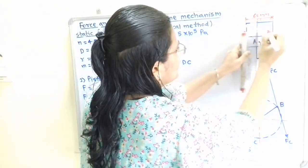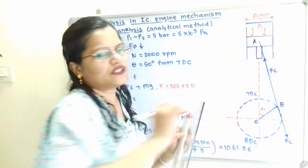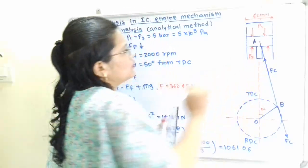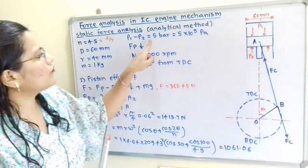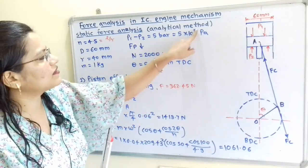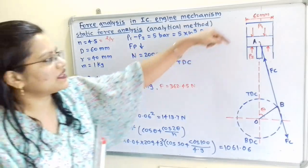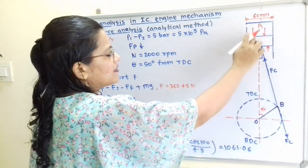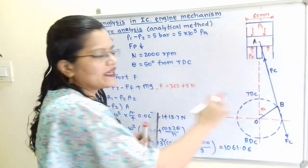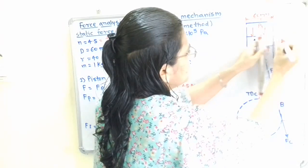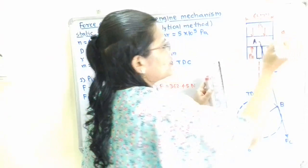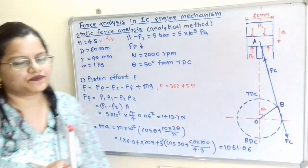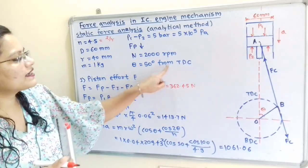On one side of the piston there is gas pressure P1, and on the other side there is atmospheric air pressure P2. So P1 minus P2 = 5 bar, standard unit Pascal, that is 5 × 10⁵ Pa. The effective gas pressure is acting in the downward direction, meaning P1 is greater than P2, and the piston is moving downward. Acceleration is also in the downward direction. Crank speed N = 2000 rpm and theta = 50 degrees from TDC, that is top dead center.